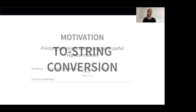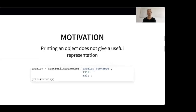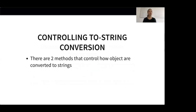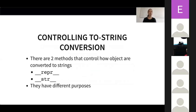The next section is about how we can convert objects to strings. Right now, our CastleKilmir members cannot be printed nicely. For example, let's take a look at how the instance of Bromley, CastleKilmir's caretaker, looks like when printed. This is not very useful — we only see the name of the class and a number which represents the memory address of the instance. It would be much better to have a nice representation which gives the name of the instance and maybe some other useful information. There are actually two methods in Python that control how objects are converted to strings: __repr__ and __str__.